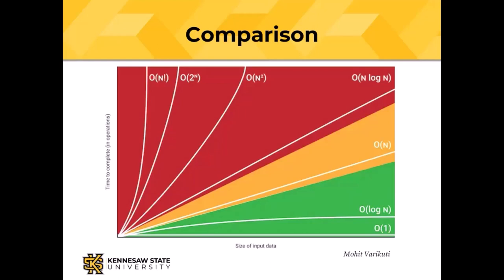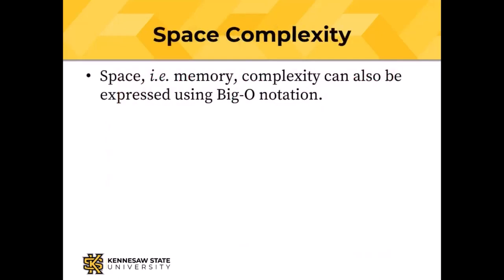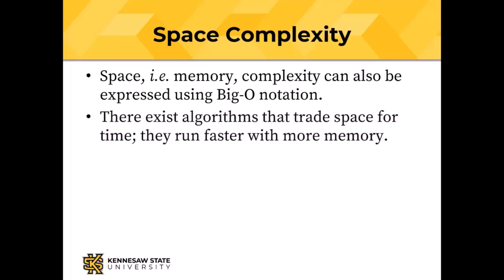The two things to take away: there are undecidable and intractable problems, and there's a way of measuring them with Big O. We were talking about time complexity, but there's also space complexity — how much memory does an algorithm need to run? Some algorithms run much better with a lot of memory, and we can use Big O notation for that as well.